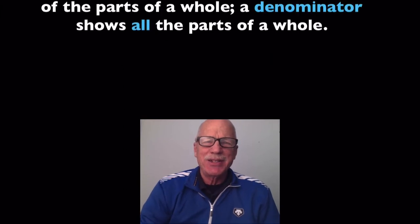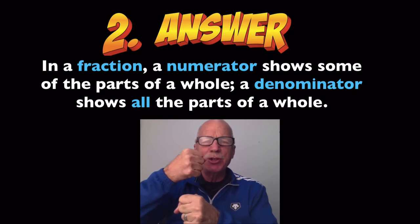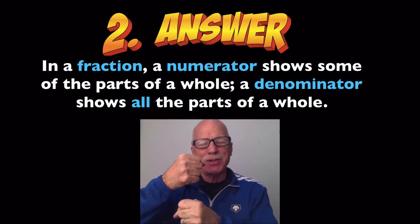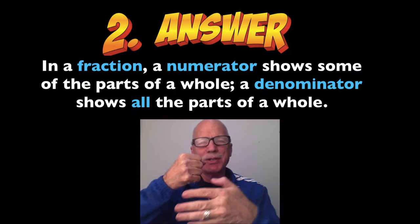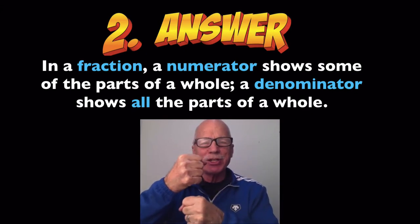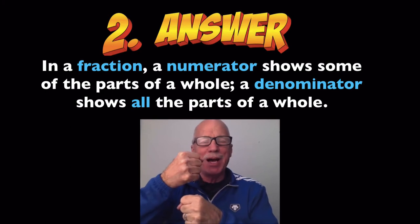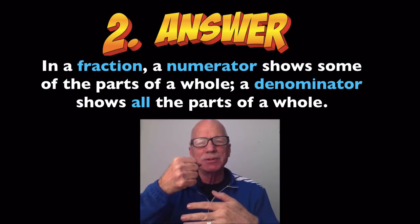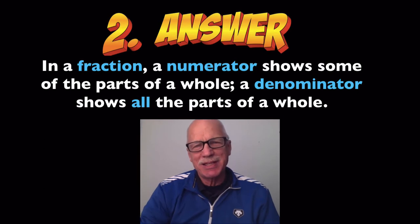And here's the answer. In a fraction, a numerator shows some of the parts of a whole. A denominator shows all of the parts of a whole. That's our answer. Now let's expand it.